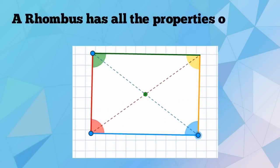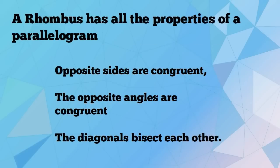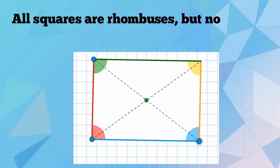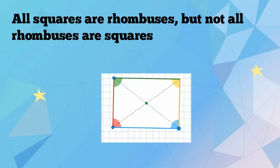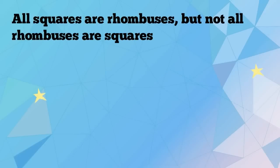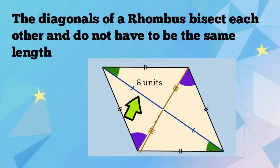A rhombus has all the properties of a parallelogram. These include: opposite sides are congruent, opposite angles are congruent, and the diagonals bisect each other. All squares can be considered a rhombus, but not all rhombuses are squares. The diagonals of a rhombus bisect each other, but they do not have to be the same length.